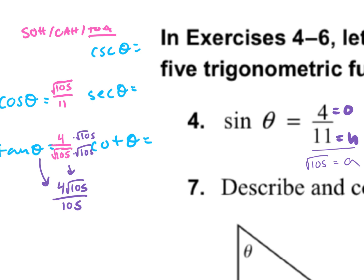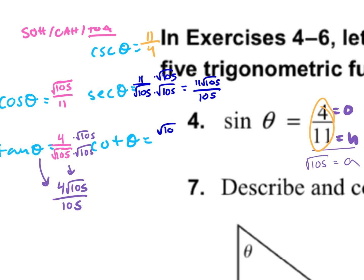Cosecant is 11 over 4 — we just flip sine. Secant is 11 over square root 105; we rationalize to get 11 square root 105 over 105. Cotangent is square root 105 over 4 — we just flip tangent.